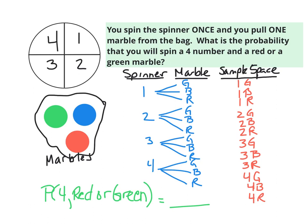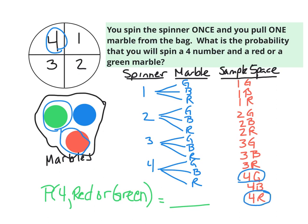Last one — same spinner and marbles. What is the probability that you spin a four and pull either a red or green marble? I'm looking for the number four and either red or green, which gives me four-green and four-red. That's two favorable outcomes out of twelve, which simplifies to one-sixth. So the probability of spinning a four and choosing either a red or green marble is one out of six.